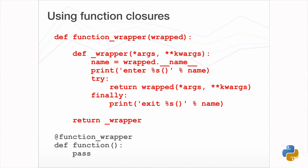Using a class to implement the wrapper for a decorator isn't actually that popular. Instead, a function closure is more often used. In this case, a nested function is used as the wrapper, and it is that which is returned by the decorator function. When the now-wrapped function is called, the nested function is actually being called, which in turn calls the original wrapped function.